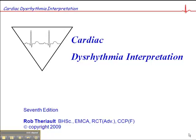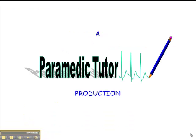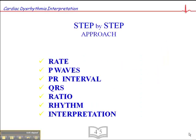This next section is on a step-by-step approach to rhythm interpretation, and you'll find this in your workbook on page 45. We'll look at heart rate, P-waves, PR interval, QRS duration, ratio of P-waves to QRSs, and rhythm. Then finally, we take all of that information and formulate an interpretation.